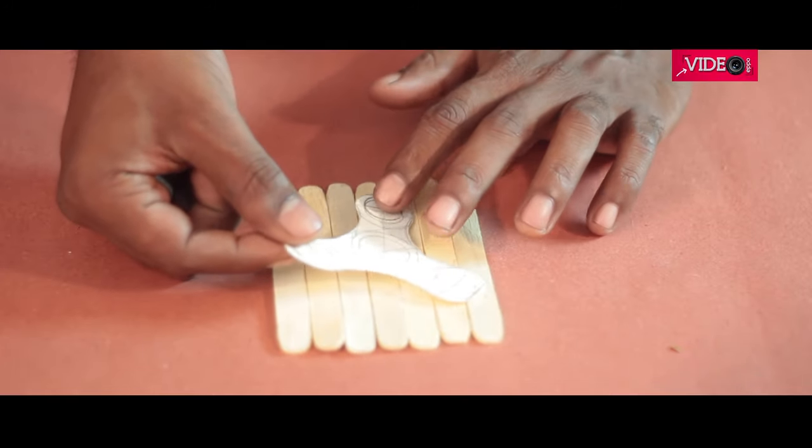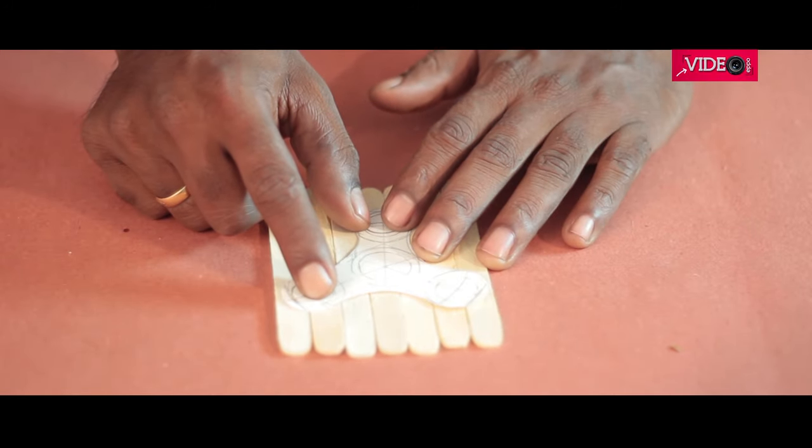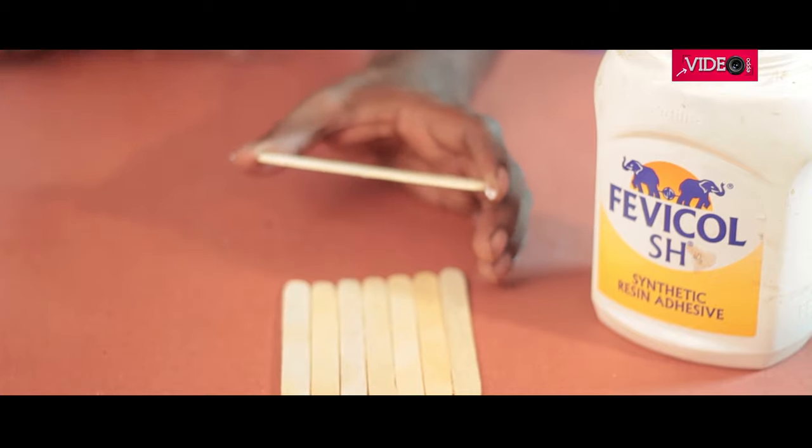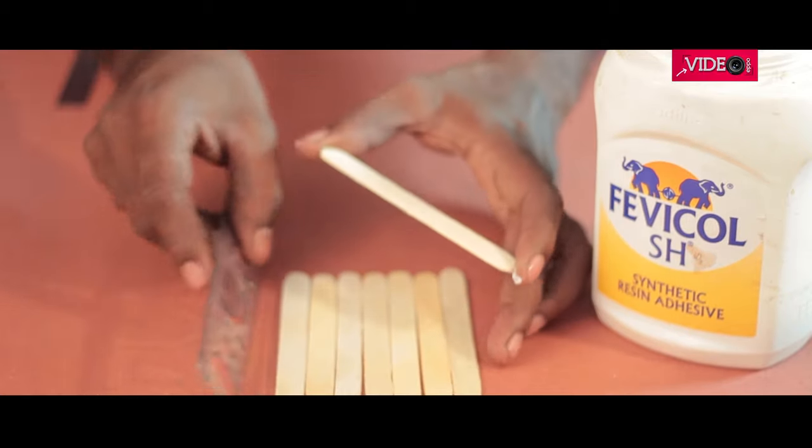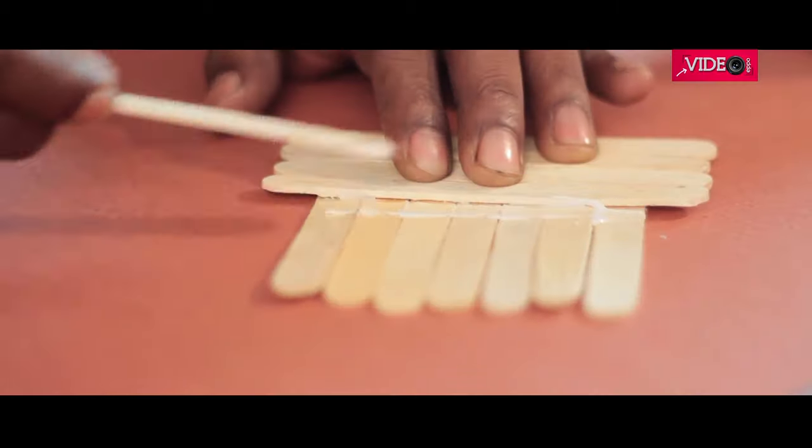For the second one, I lay the popsicle sticks to get the required size. Then using wood glue, I stacked and glued them for about three layers to match the thickness of the bearings I will be using.